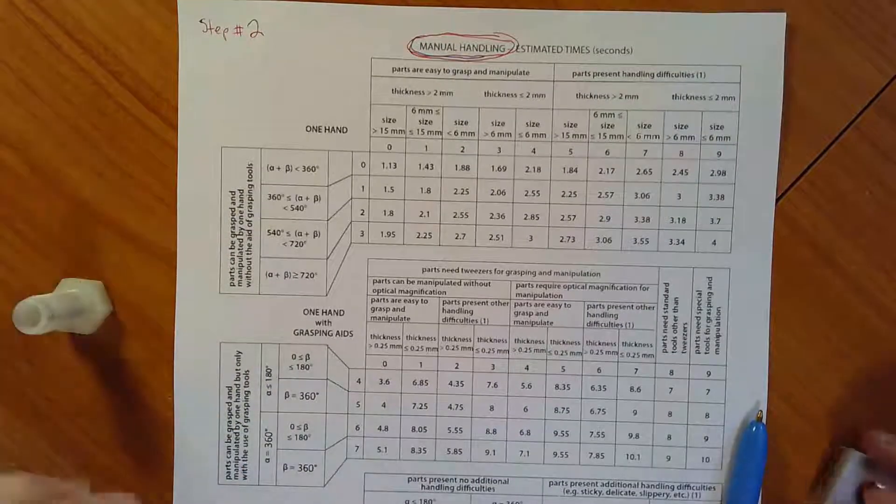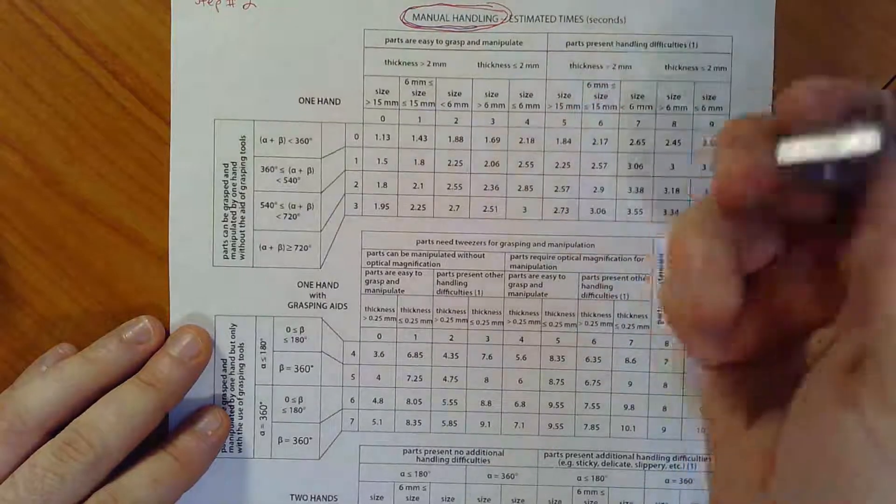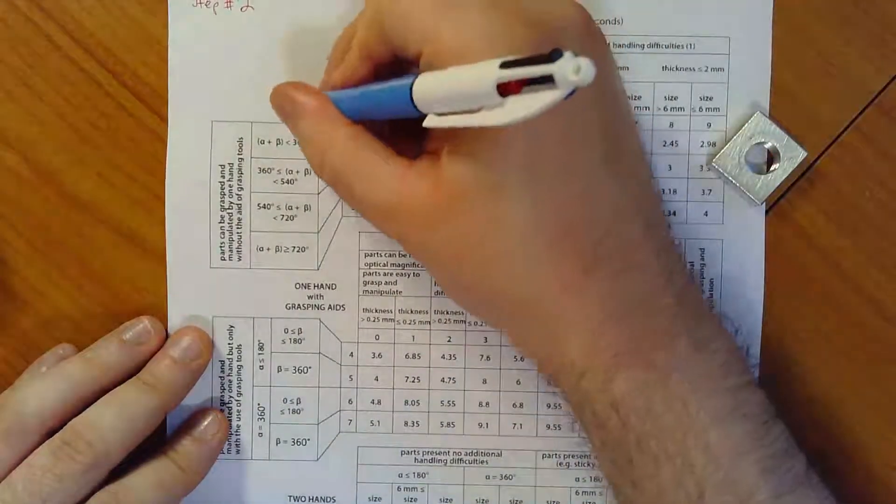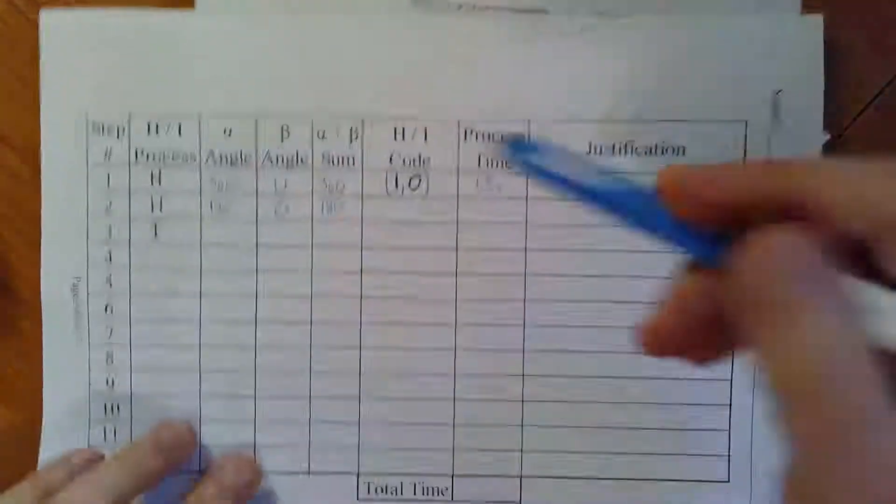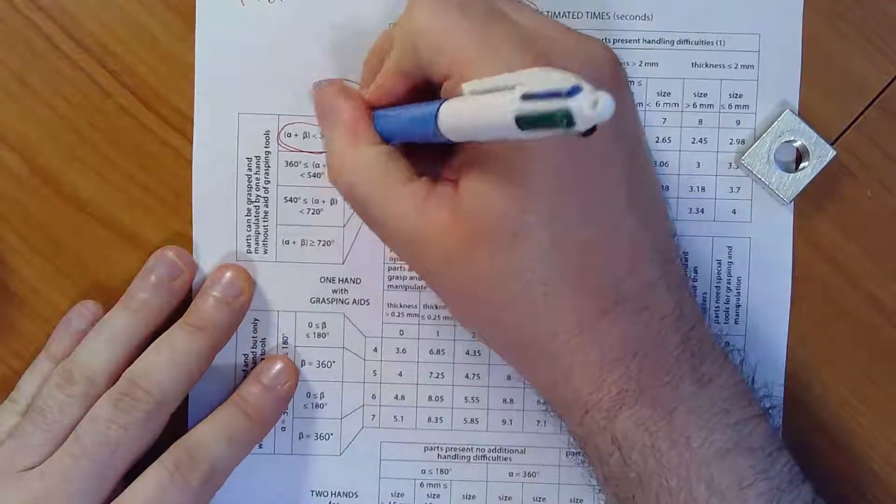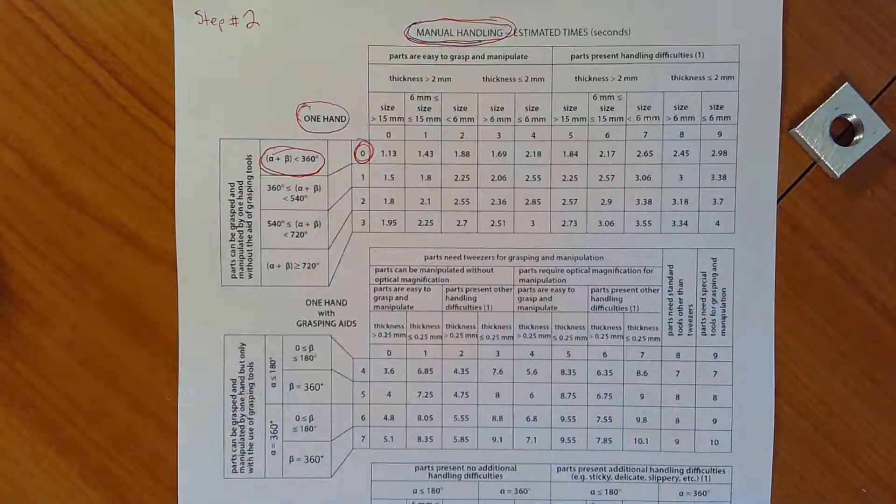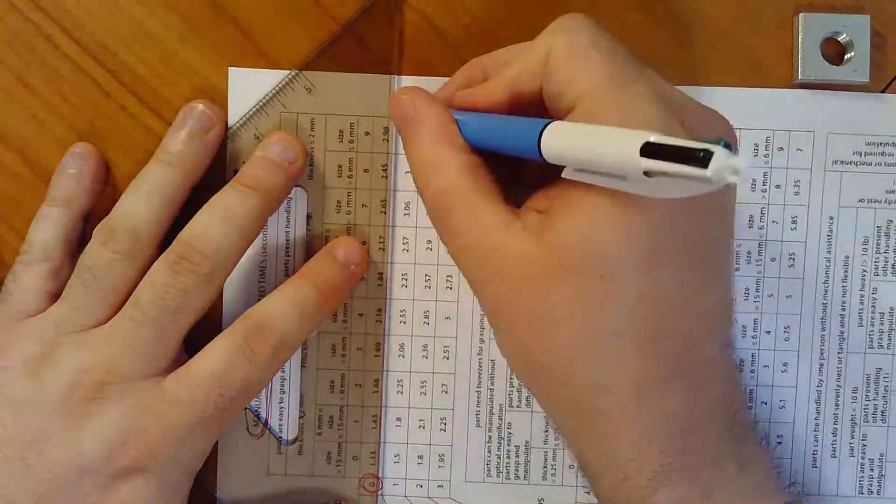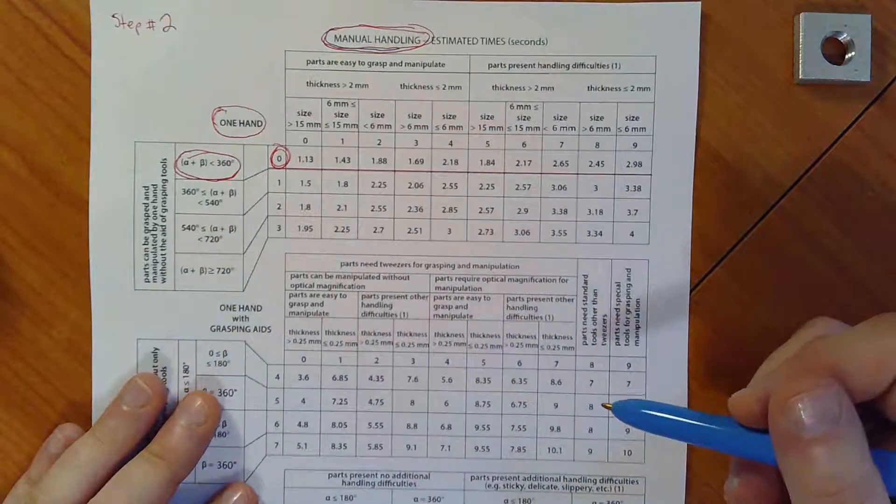Next question. Am I dealing with one hand, one hand with grasping tools, two hands or two hands because of large size? Well, hey, look, I can pick this up with one hand. No tools needed. No problem. So I'm going to circle one hand. And what is my sum of alpha plus beta? Well, remember from before, it's 180 degrees. And so let's circle this guy. Alpha plus beta is less than 360 because it's 180. And that gives us the first number in our two number handling time, handling coordinate, which is zero. I'm going to grab my straight edge. I'm going to come along here and draw in this line to remind myself that somewhere in this row is the time that I'm interested in for this particular handling process.